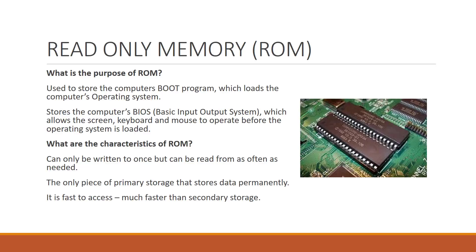Data is stored on the ROM chip during the manufacturing process, and can only be safely written to once, but it can be read from as often as necessary. ROM is the only primary storage device that stores data permanently, and is non-volatile, meaning it does not lose its data when the power is off. It is also fast, so read operations are very quick.